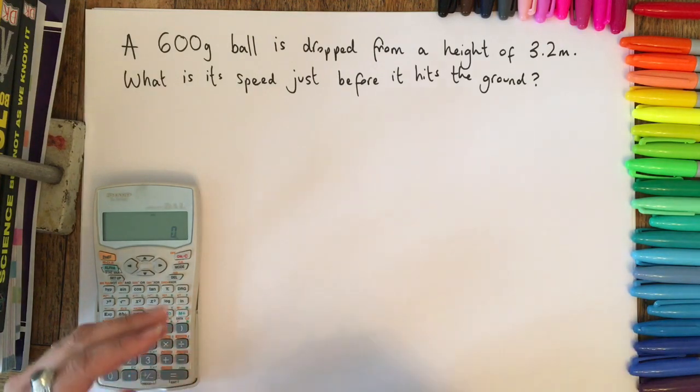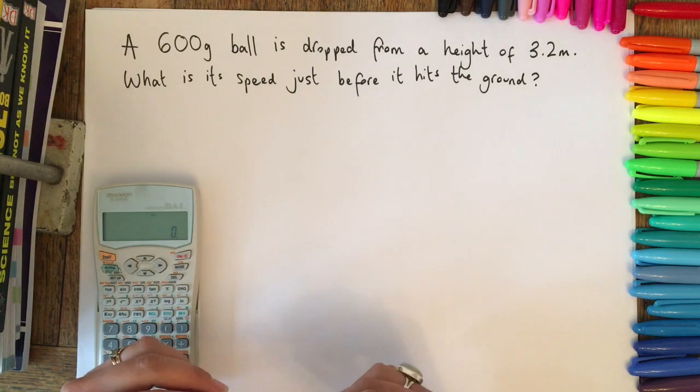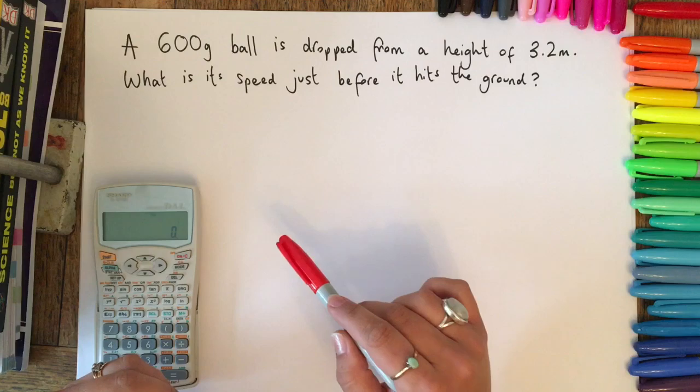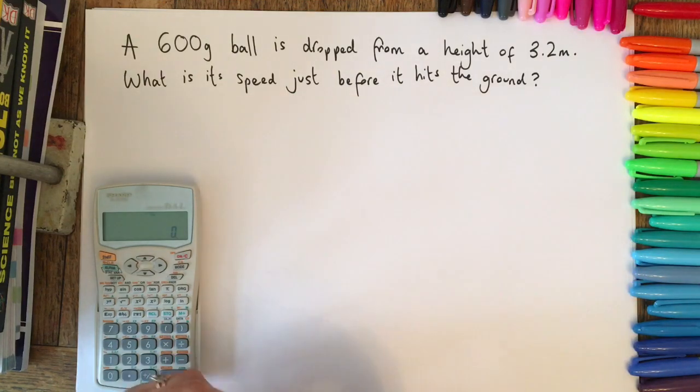If we read the question through first, and then I'll tell you some of the reasons that people fall down usually. A 600 gram ball is dropped from a height of 3.2 meters, what is its speed just before it hits the ground?